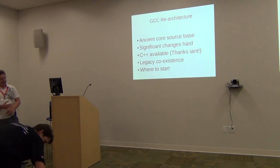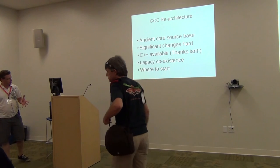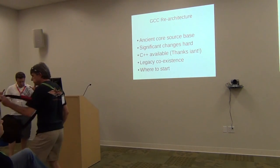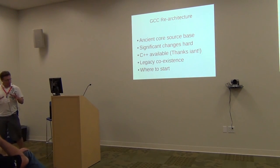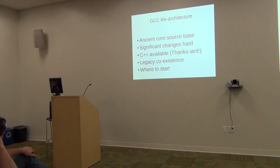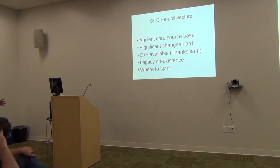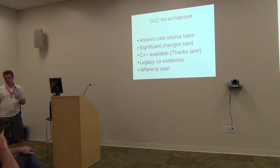We've added tree SSA and LTO and made a lot of significant changes, but the actual core data structures underneath it all — trees and stuff like that — have never really changed. It's become such a big pile of spaghetti code that it's really difficult to go in and make significant changes.